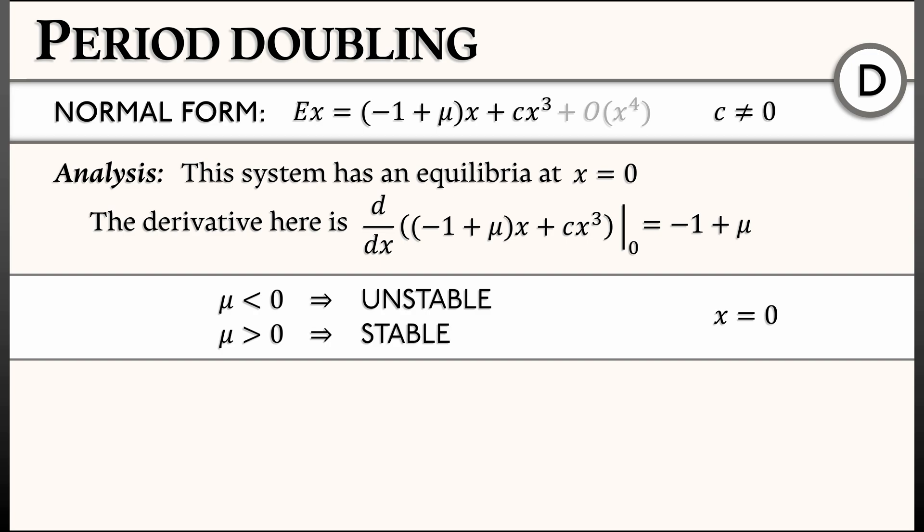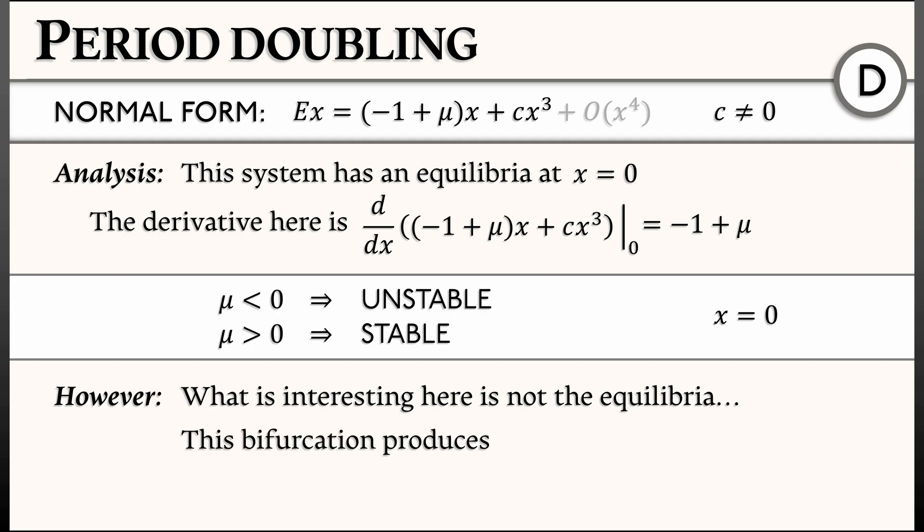And that's it. That's all there is. But what is interesting here is not the equilibria, and what distinguishes this from a continuous time system is that this bifurcation produces a periodic orbit, a periodic orbit of period two. Hence the name period doubling.